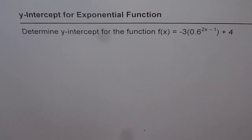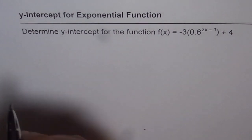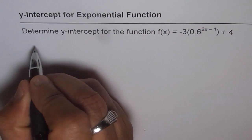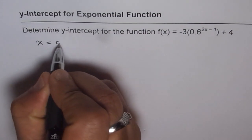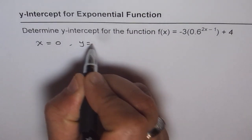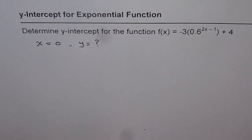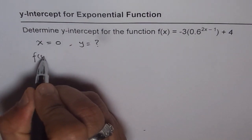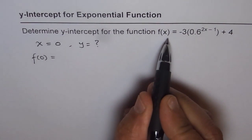Now, the y-intercept is a point where the x-value is 0. So whenever you have to find the y-intercept, you have to equate x equals 0 and find what the y-value is — that is the y-intercept. So for this function, f(0) will give us the y-intercept.